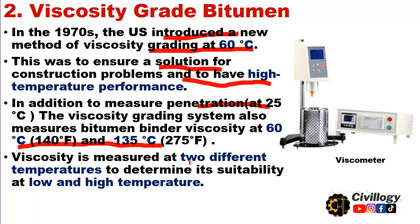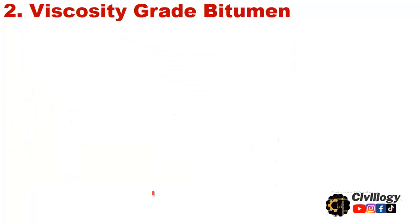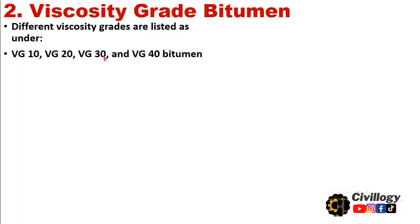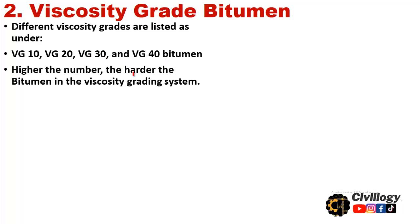Viscosity is measured at two different temperatures to determine suitability at low and high temperatures. Different viscosity grades are listed as VG10, VG20, VG30, and VG40 bitumen. Higher the number, harder the bitumen in the viscosity grading system.